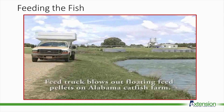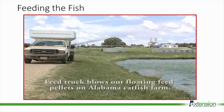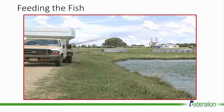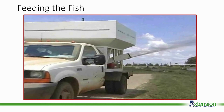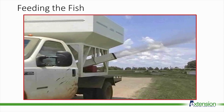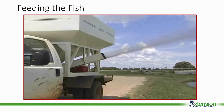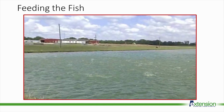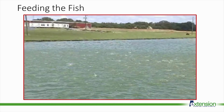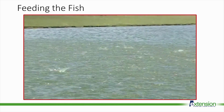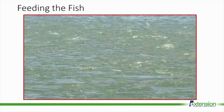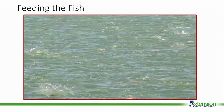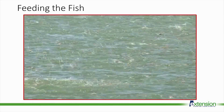Feed is distributed across the pond surface using a truck or tractor and a feed hopper with a blower. Many feed hoppers have an integrated scale and control box inside the truck so operators can manage and record how much feed is added to the pond. Distributing feed over a large area allows all sizes of fish equal access to the food. Catfish farmers may feed upwards of 100 pounds per acre per day during the summer months — that's a lot of nutrients going into the pond.